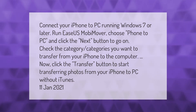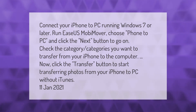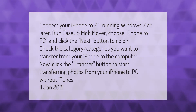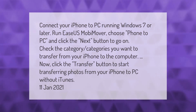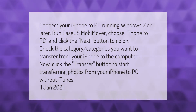Connect your iPhone to a PC running Windows 7 or later. Run EasyOS MobiMover, choose Phone to PC, and click the Next button. Check the categories you want to transfer from your iPhone to the computer, then click the Transfer button to start transferring photos from your iPhone to PC without iTunes.